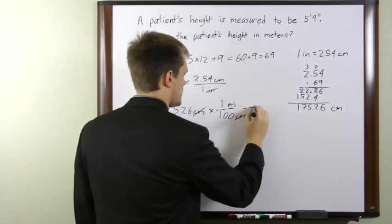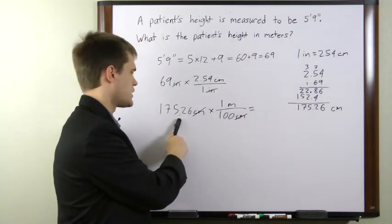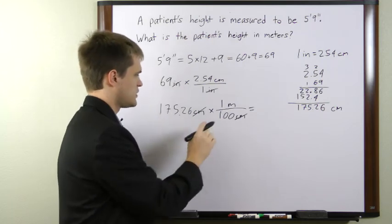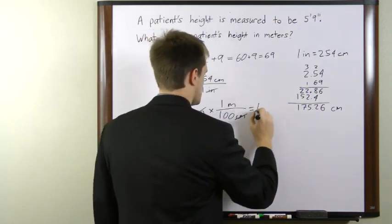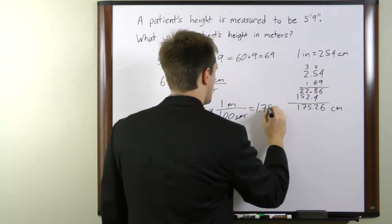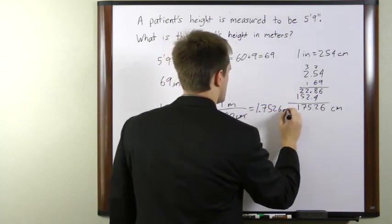So to divide by 100 all we're going to do is we're going to move our decimal point two places to the left because there are two zeros. So this is going to be equal to 1.7526 meters.